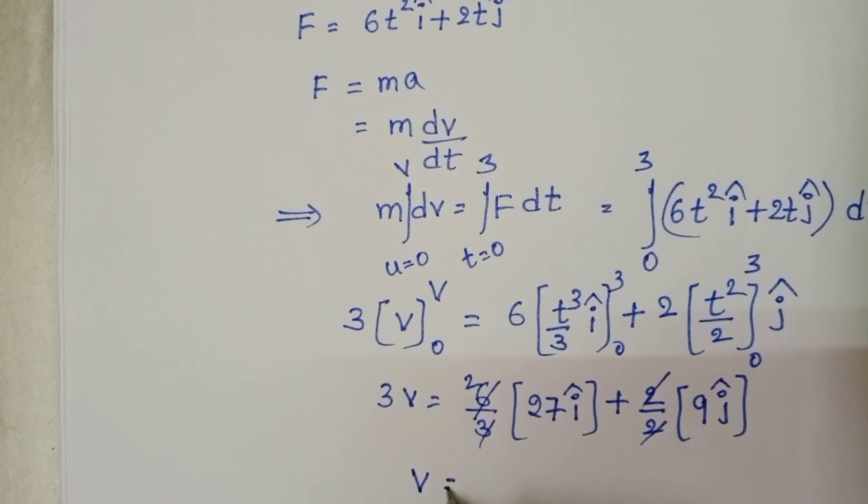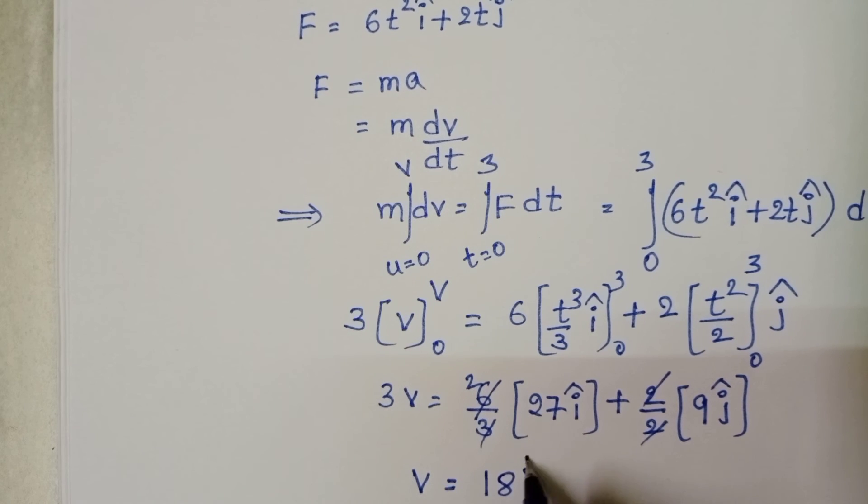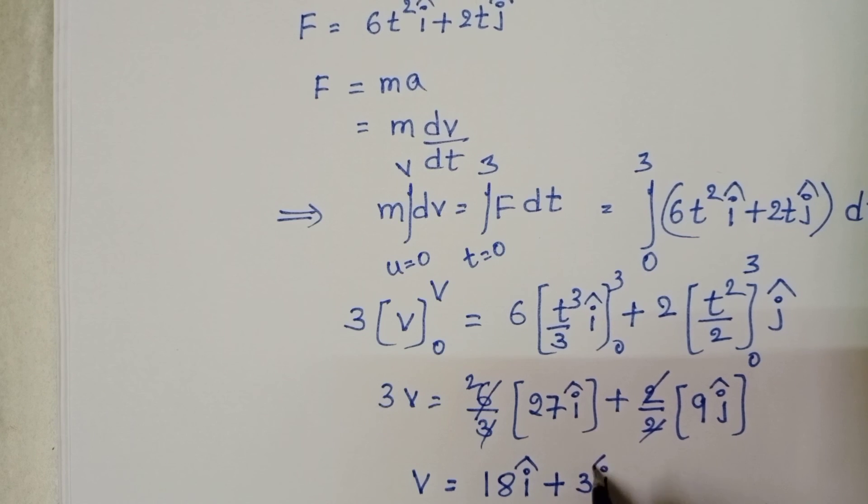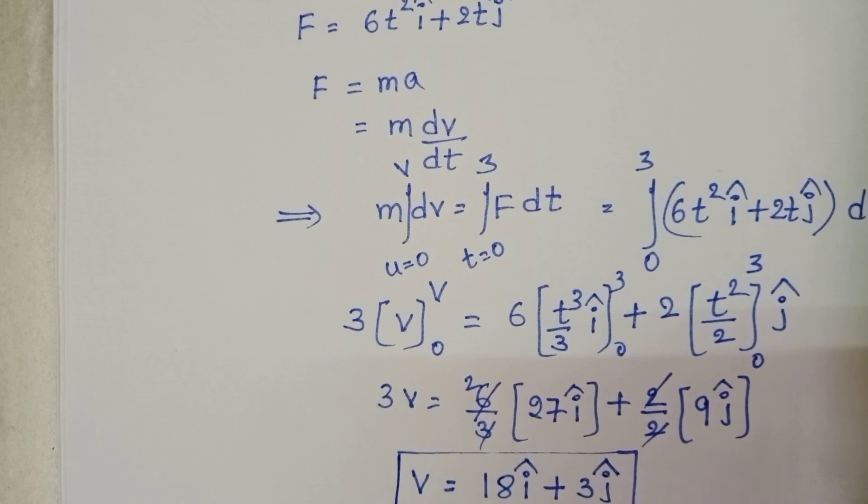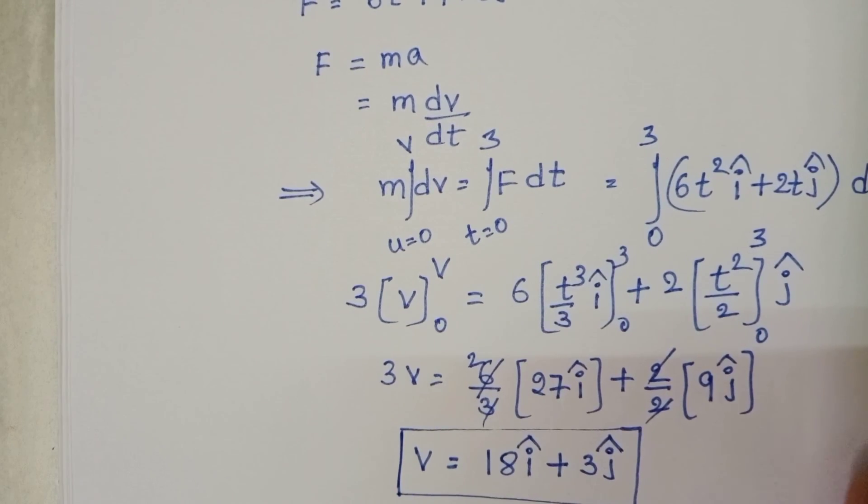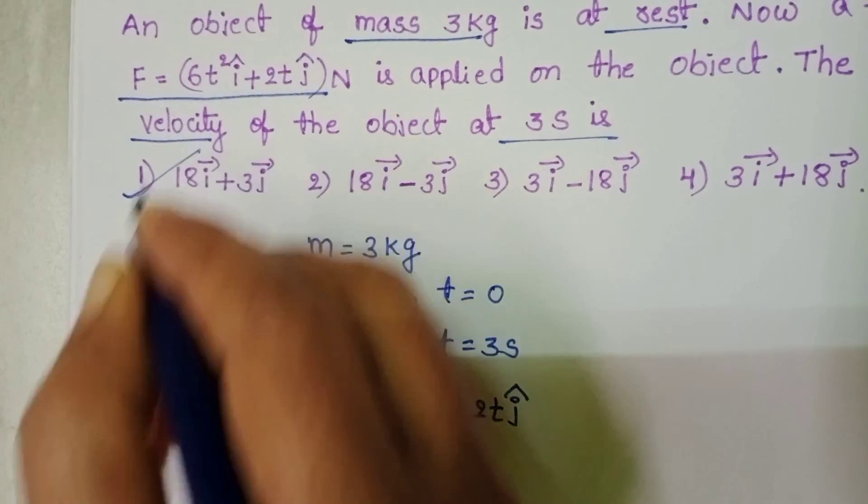From this, v equals divide with 3, 18î + 3ĵ. Final velocity of the object is 18î + 3ĵ. First option is correct.